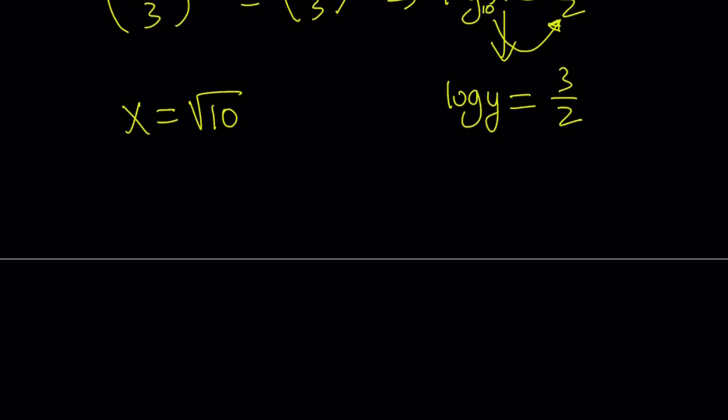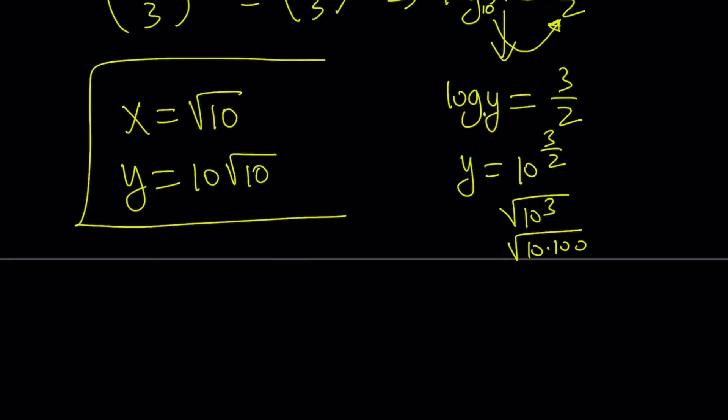And again, by using the definition, since the base is 10, y becomes 10 to the power 3 halves. And you can basically write it as either the square root of 10 to the third or the square root of 10 times 100, and that becomes 10 root 10. So y becomes 10 times the square root of 10 from here. Basically, there's only one pair of solutions, and this is it.